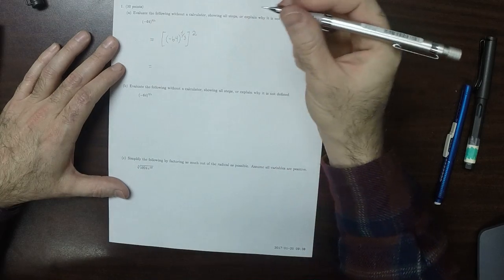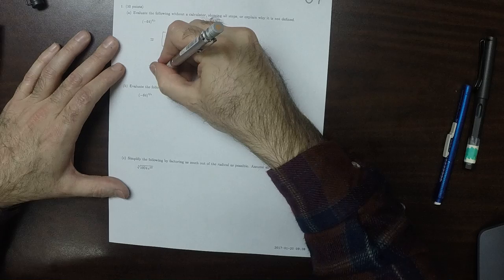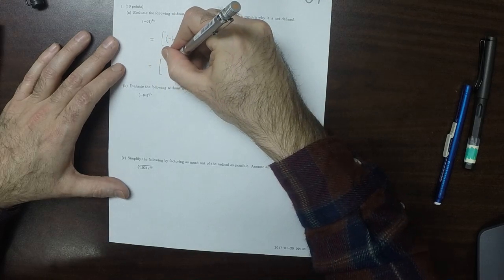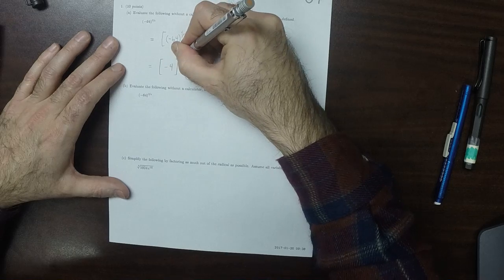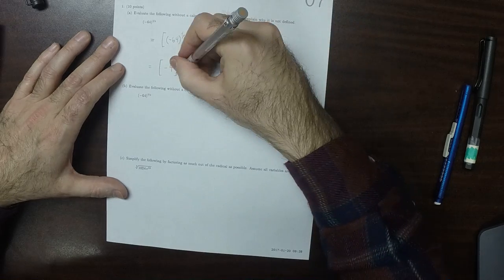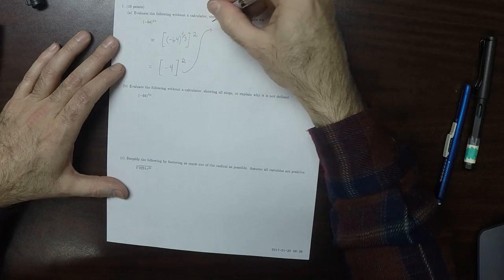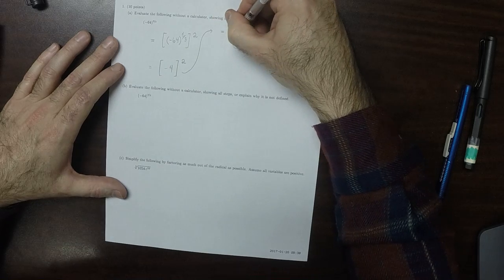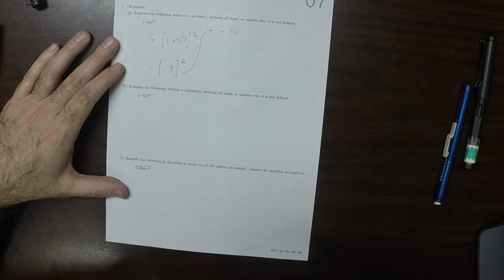This is equal to the cube root of negative 64, which is negative 4. Then we square that. Negative 4 squared is 16. So that's the answer to part A.